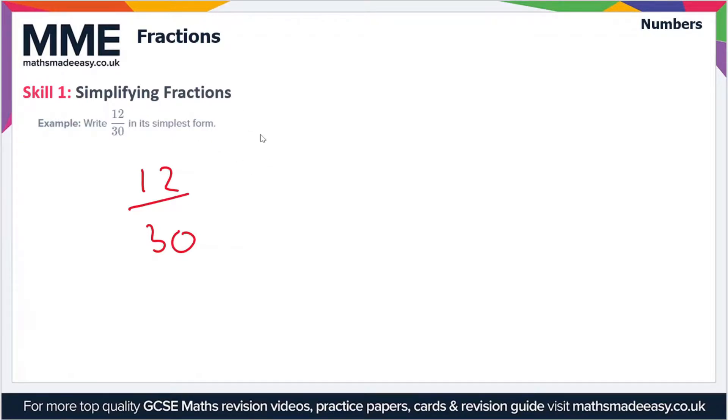When we simplify a fraction, what we aim to do is take out a common factor of both the numerator and the denominator. We're interested in finding a factor of 12 and a factor of 30, and ideally we want to find the largest factor of both.